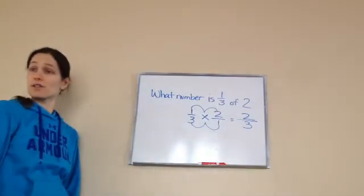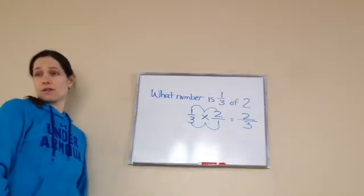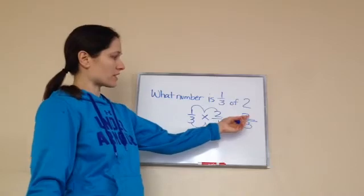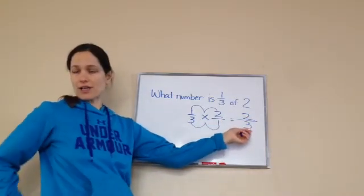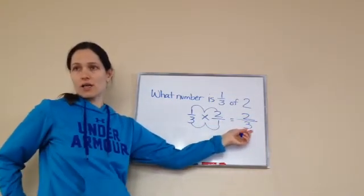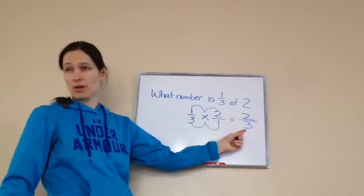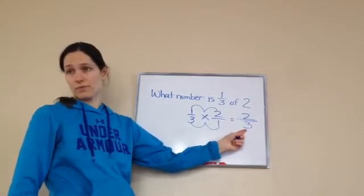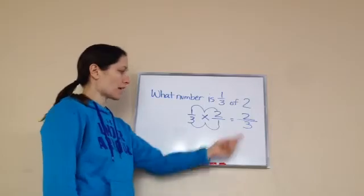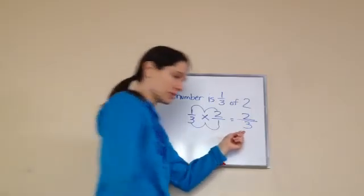The answer is 2 3rds. Now, if it said 6 3rds, then I could divide 6 divided by 3. But do you see how this is a smaller number on top and a bigger number on the bottom? It won't divide in 2. So the answer is 2 3rds.